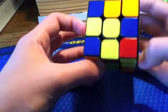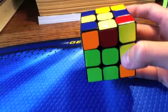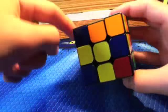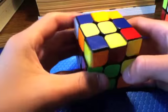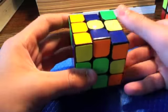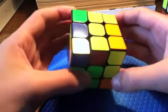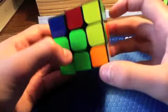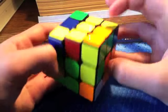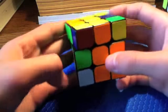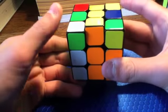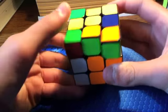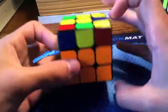What I'd probably do next is blue and orange into the back, because the edge is right here and the corner is right here. So I can bring this over, connect it, move it back, insert. Then I've got the corner down here and the edge up here, so I can bring it over, rotate, bring it up, move it over, insert.